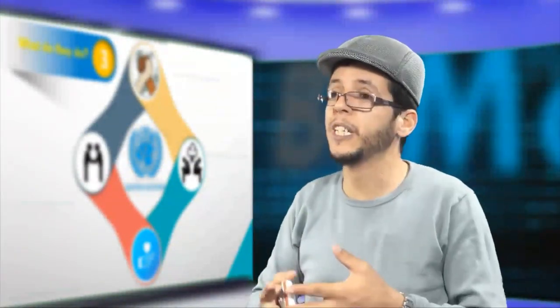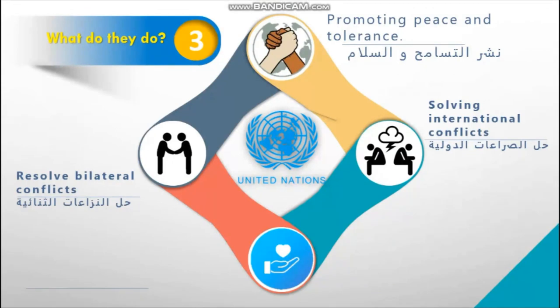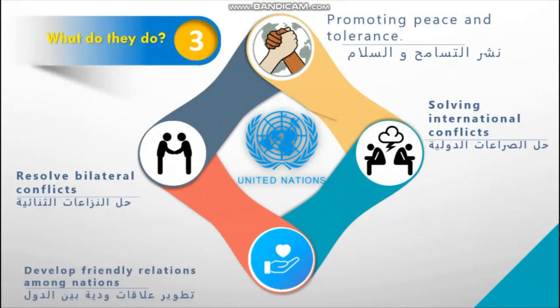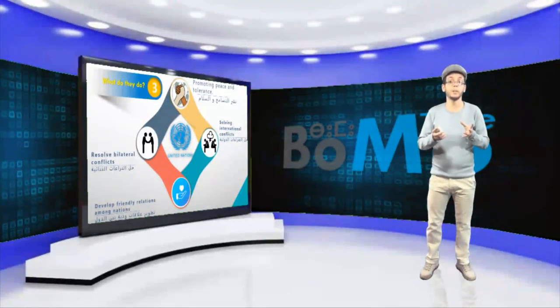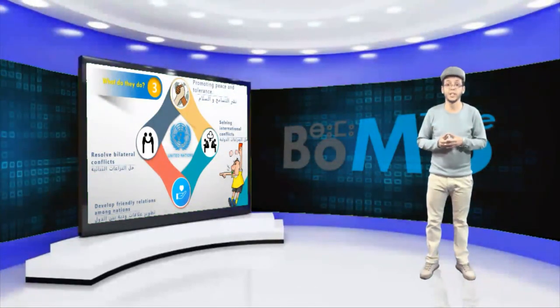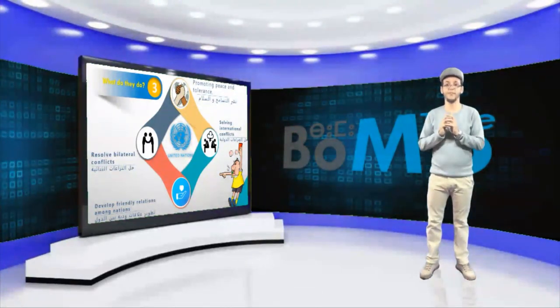Now that we've given examples of international organizations, let's talk about what these organizations do — in other words, their roles and objectives. The UN aims at promoting peace and tolerance by solving international conflicts, resolving bilateral conflicts between two countries, and developing friendly relations among nations. We can say that the United Nations plays a similar role to that of the referee in a football match, as both try to keep things under control using law for a fair game.